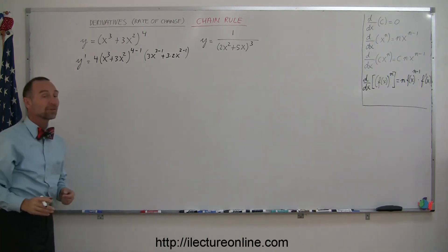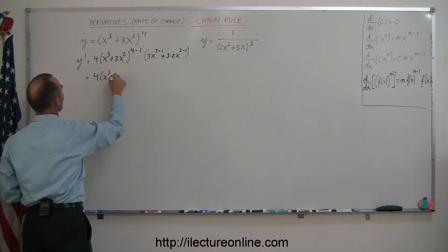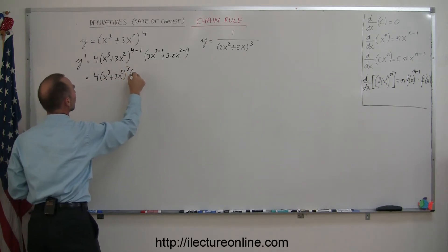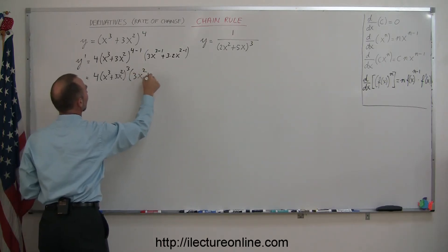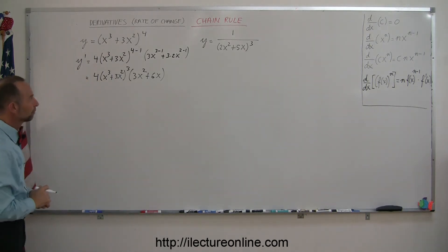And then we simplify, so this is equal to 4 times x cubed plus 3x squared to the 3rd power times 3x to the 2nd power plus 6x to the 1st power. And that's the derivative of our original function.